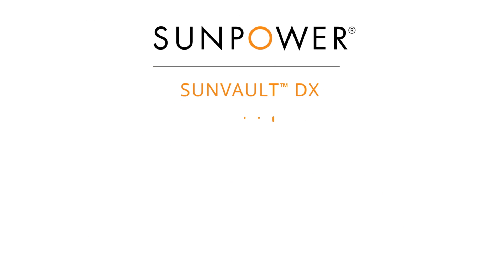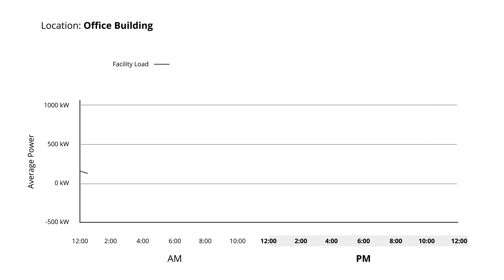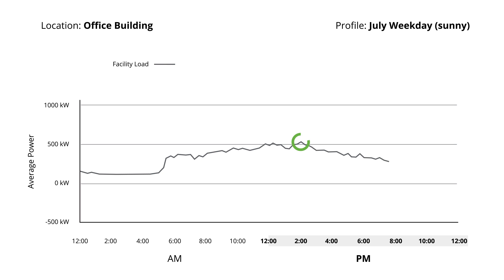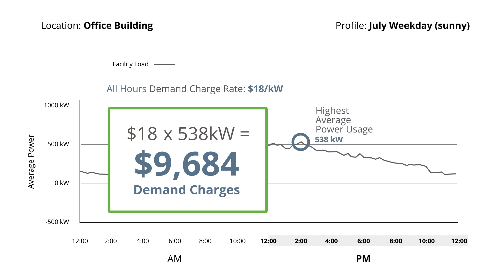Let's see how Sunvault DX storage intelligently analyzes facility load, solar production, TOUs, and utility rate structures, including demand charges, to save money. This graph illustrates an example energy load profile for an office building, showing the amount of power used from the utility grid over the course of a typical sunny workday in July. It ramps up as workers start coming in, continues to climb into the afternoon — the hottest time of the day when the AC system is hard at work — and then slowly declines until late in the evening. The facility's highest average power usage for the month occurs right around 2 p.m. and is 538 kilowatts. With an all-hours demand charge rate of $18 per kilowatt, that calculates to $9,684 per billing period.